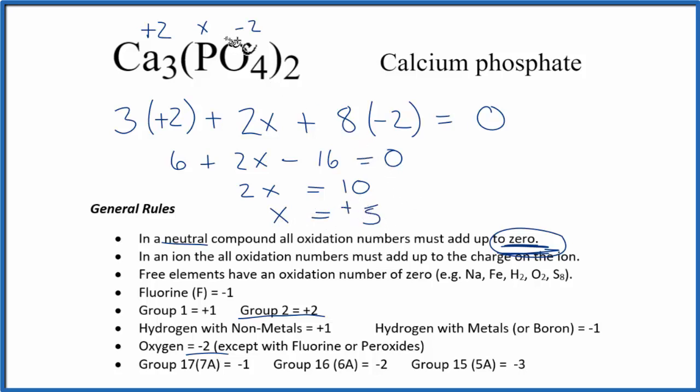Positive 5, right? So phosphorus here has an oxidation number of plus 5. And remember, that's each phosphorus atom. We have two of them, and each one has an oxidation number of plus 5. This is Dr. B with the oxidation numbers for each of the elements here in Ca3(PO4)2, calcium phosphate. Thanks for watching.